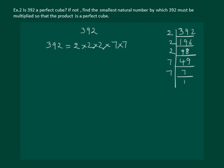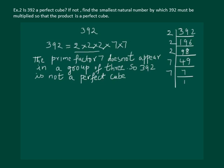On prime factorization we can write 392 equal to 2 into 2 into 2 multiplied by 7 into 7. Now let us group the factors in 3. But 7 into 7 does not form a triplet group, so 392 is not a perfect cube.